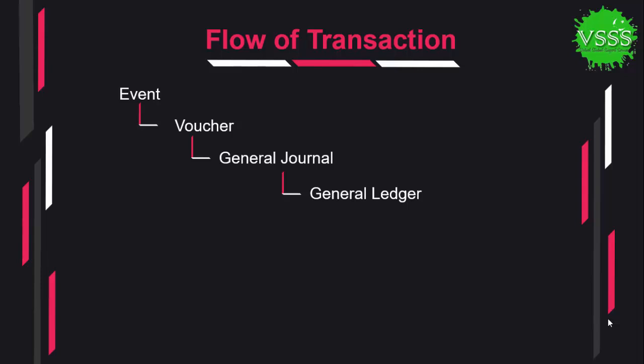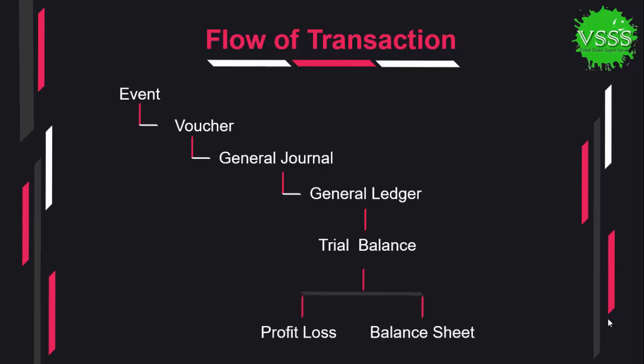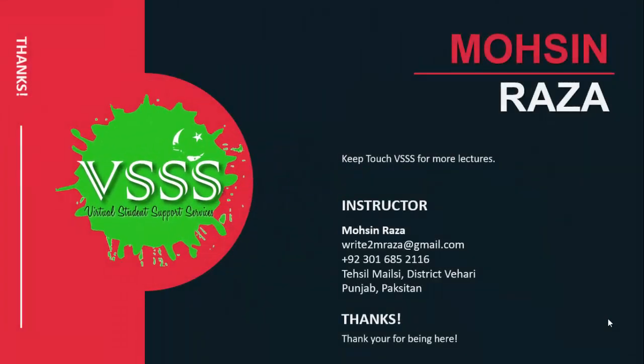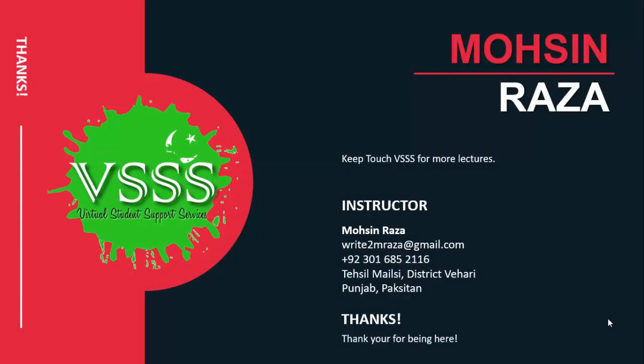From the journal, entries are posted to the ledger. The ledger is a separate record of each related transaction. From the ledger we prepare a trial balance. After the trial balance we prepare two financial statements: the profit and loss account, which shows the financial performance of the business, and the balance sheet, which shows the assets and liabilities. This is the flow of a transaction. Keep watching Virtual Student Support Services YouTube channel. Thank you very much, take care.